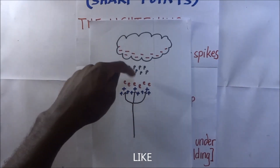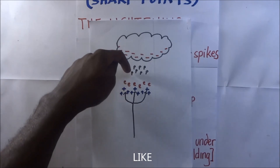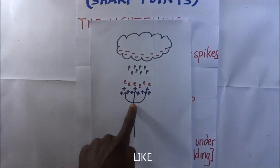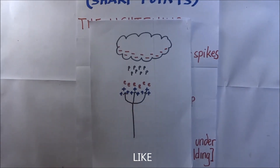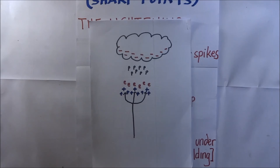The negative electrons are attracted to the spikes. As a result, the electrons from the cloud are safely conducted to the ground, and this prevents lightning from striking the building.